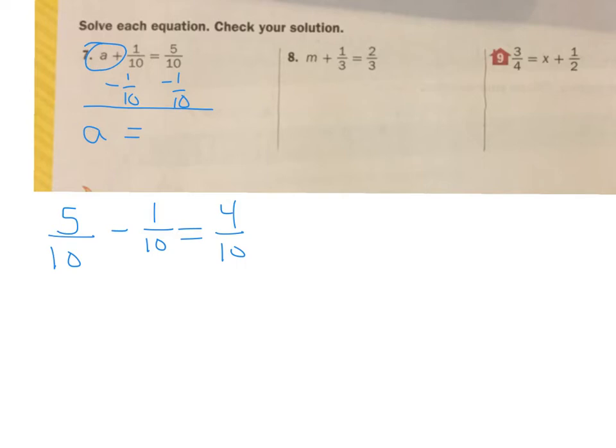I could reduce it, but I think I'll keep it the same for now because I want to check it. But A plus 1 tenth equals 5 tenths. So if A is 4 tenths plus 1 tenth, does that equal 5 tenths? It sure does, and I'm good to go. So A equals 4 tenths. Now we know I could reduce that to be 2 fifths. So either of those answers would be correct.